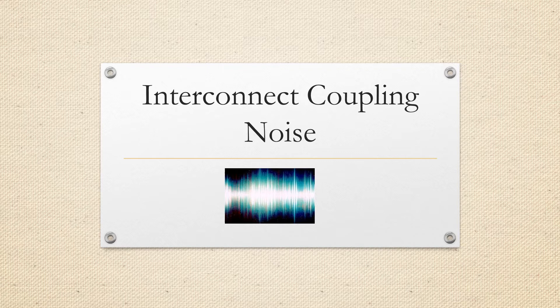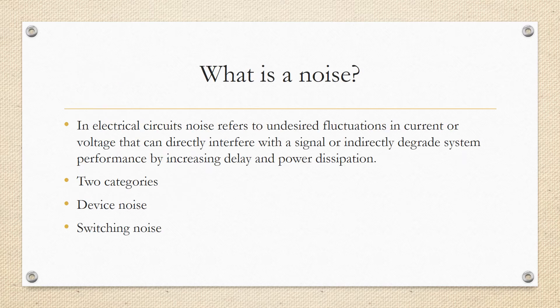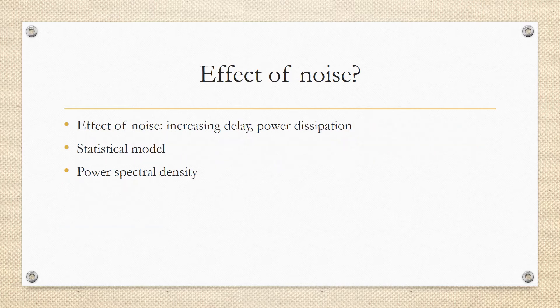But before that, we'll also see what is device noise. Here we'll be discussing about noise effect of active and passive devices: noise, capacitive coupling noise, inductive coupling noise, and effect of coupling noise. In electrical circuits, noise refers to undesired fluctuations in current or voltage that can directly interfere with signals and indirectly degrade system performance by increasing delay and power dissipation. There are two categories: device noise and switching noise. They're analyzed with statistical models and calculated power spectral density.